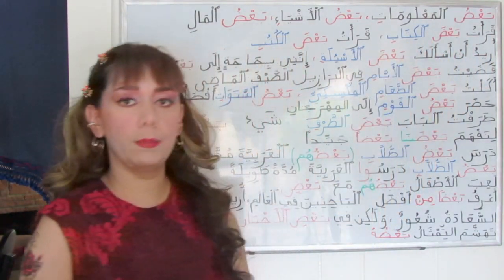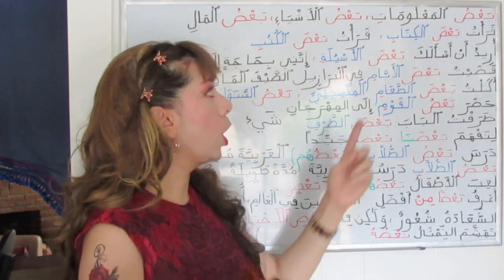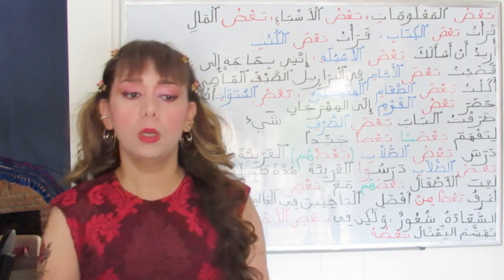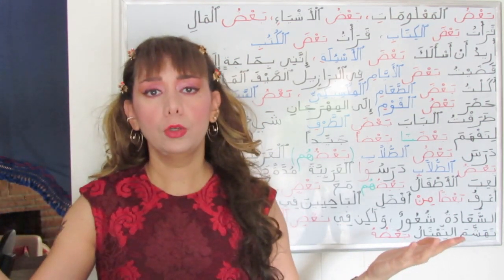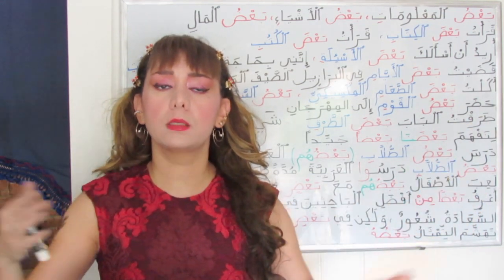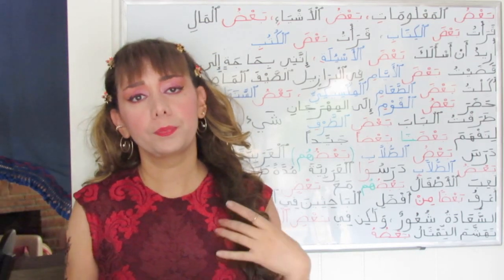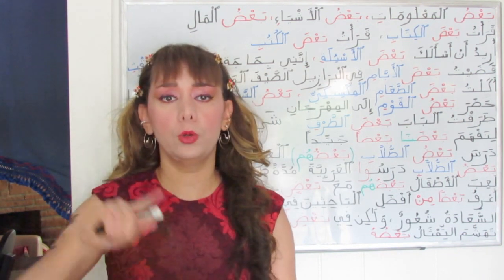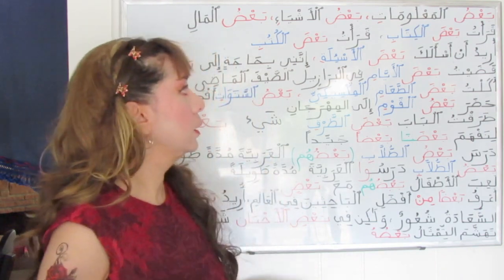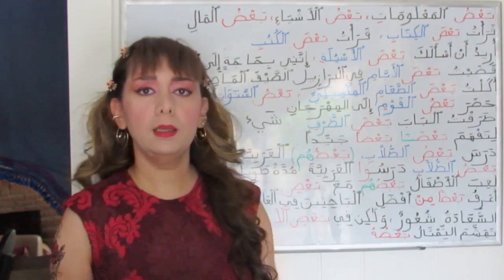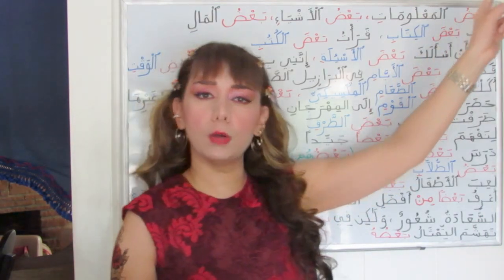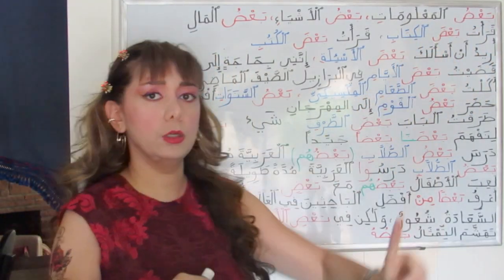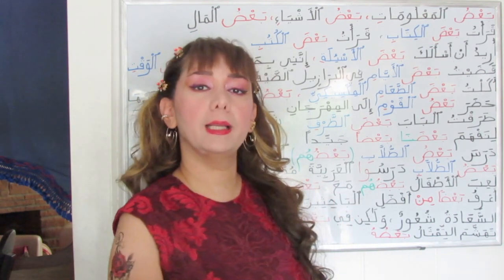Qara'tu ba'da al-kitabi — I read some of the book. Here ba'd is translated as 'some of.' You will have to judge because it may depend on the construction of the sentence or phrase in English, which is different from Arabic. There is no one-plus-one-equals-two rule. You need to know both English and Arabic grammar. So qara'tu ba'da — here ba'da is in the accusative case with the sign of fatha, because it is the object of the verb qara'a, 'read.' I read some of the book, followed by the singular definite masculine noun, al-kitab.